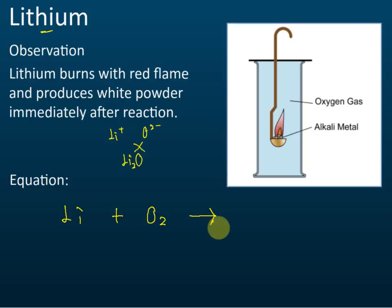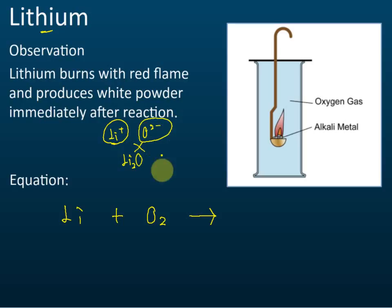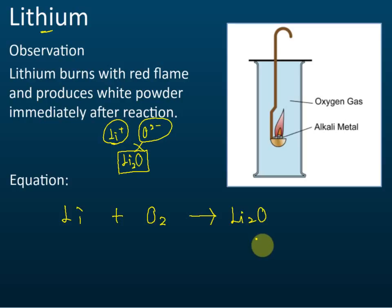You need to know that when a Group 1 metal reacts with oxygen, the product is a metal oxide. For lithium, the metal oxide is Li₂O — lithium ion Li⁺ and oxide O²⁻ give the formula Li₂O. To balance the equation: we have two oxygens, so we need two lithium oxide units, and then four lithium atoms on the left. That gives the balanced equation: 4Li + O₂ → 2Li₂O.